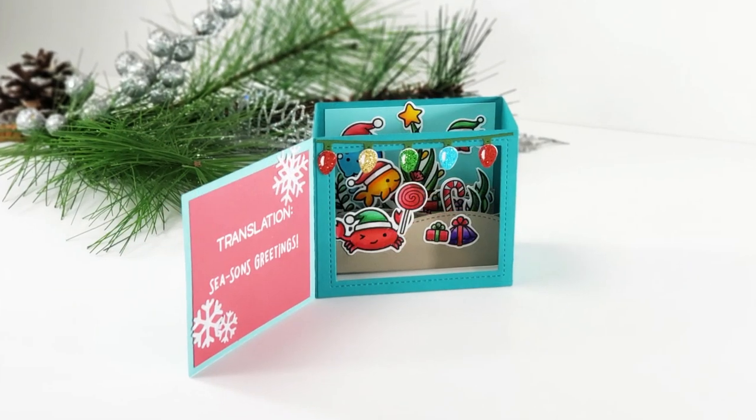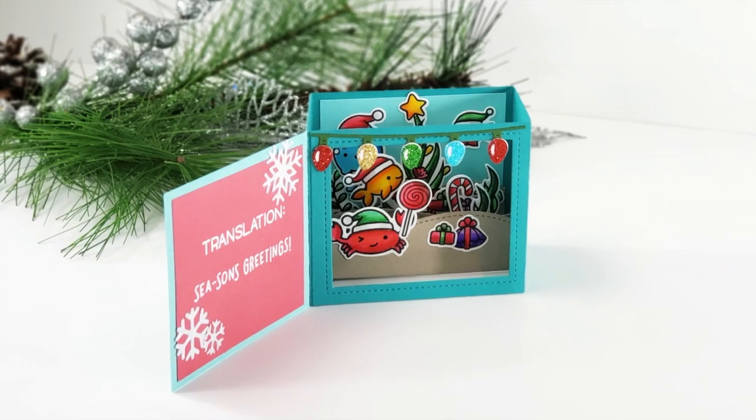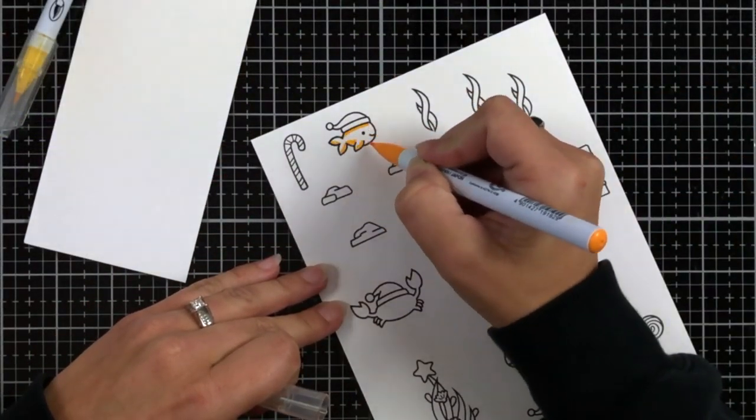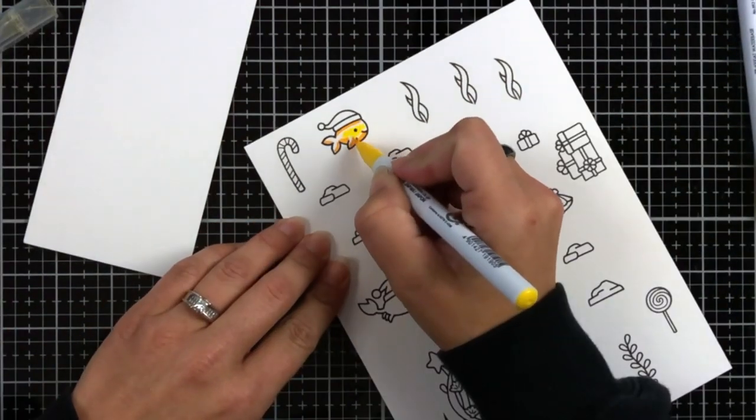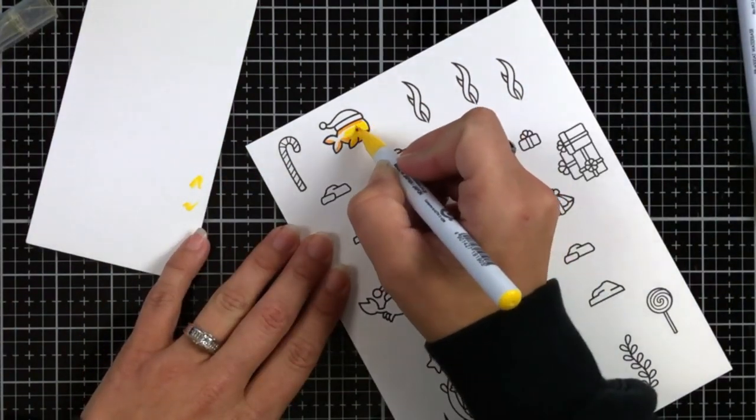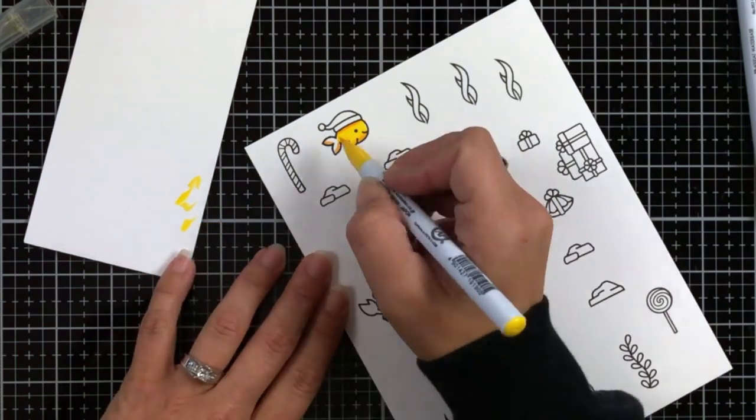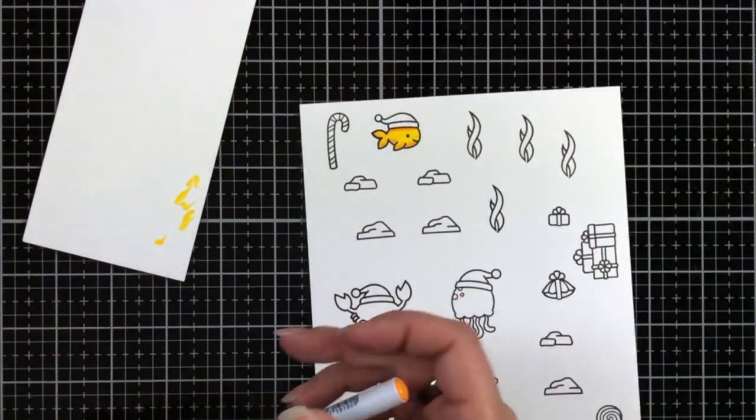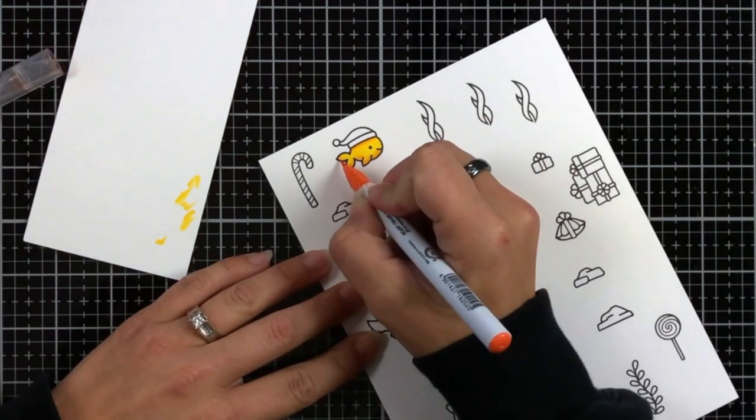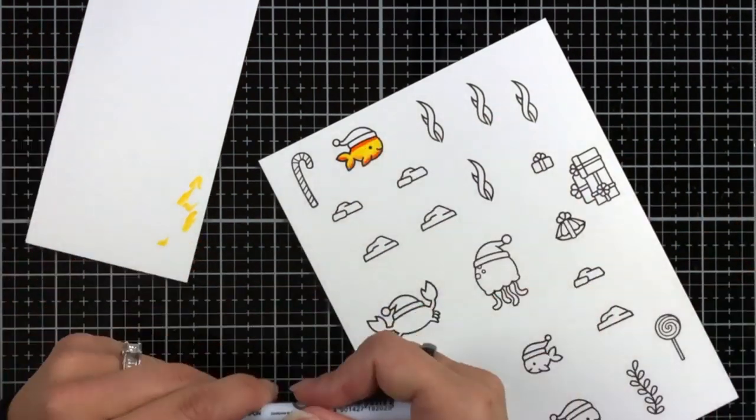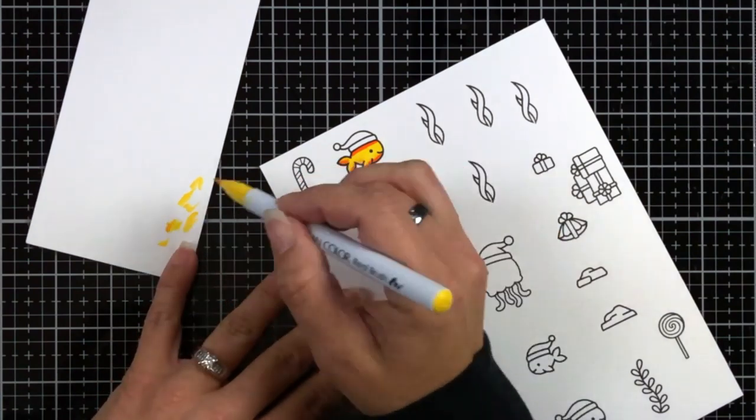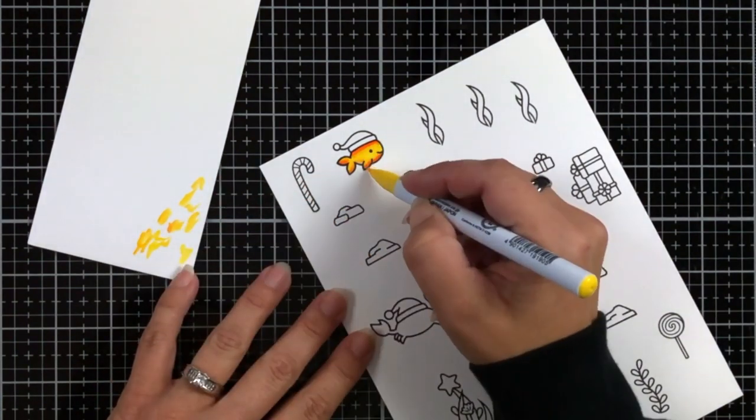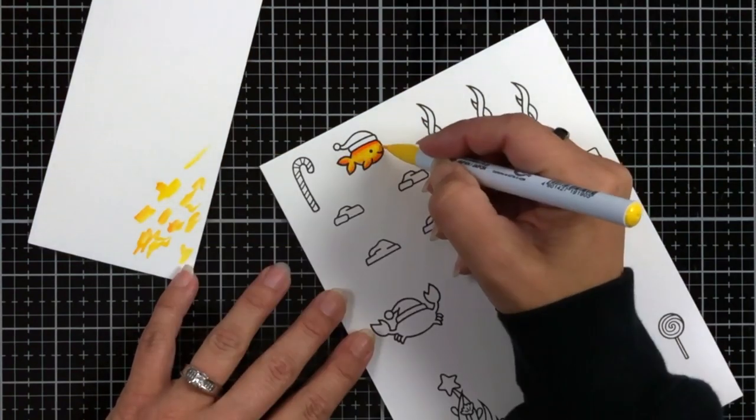I'm also going to be doing all of my coloring with my Zig Clean Color Real Brush Markers. I typically color my images with Copic markers. That was the first color medium that I started with. I'm fairly fast at it and comfortable with it. I know the color combinations really well, but it's not always an affordable option for people.